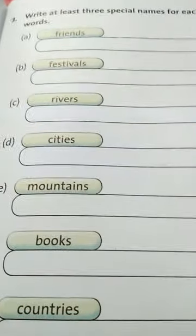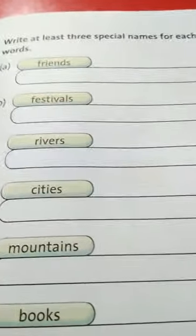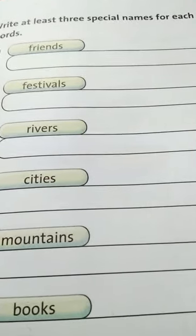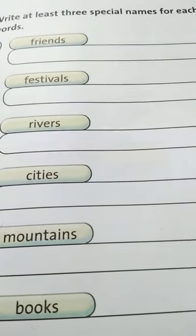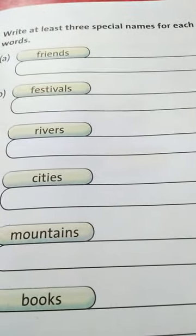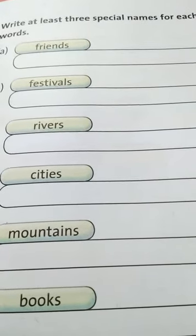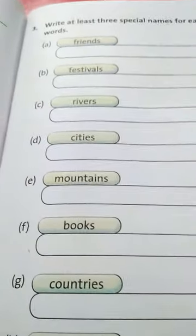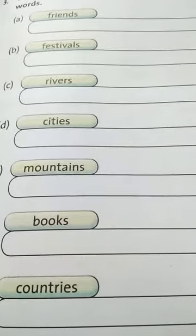Look at the next question: write at least three special names for each of the following common naming words - friends, festivals, rivers, cities, mountains, books, countries, oceans, newspapers, and continents. You can write three special names for all of them. Suppose you have to write friends, three friends name means Ram, Shyam, Mohan. Festivals - three festival names you have to write: Diwali, Dussehra, Holi. Rivers - three rivers name you can write: Ganga, Brahmaputra, Yamuna or Ganga, Kaveri, Yamuna. Cities you can write - three cities: Patna,